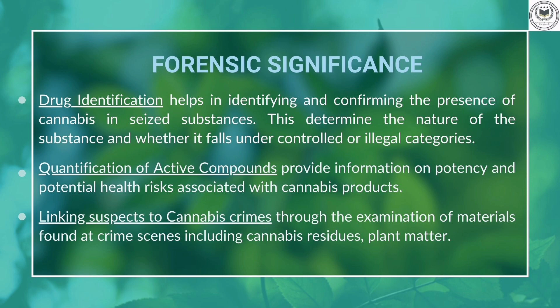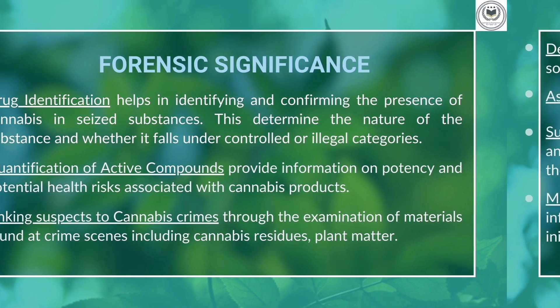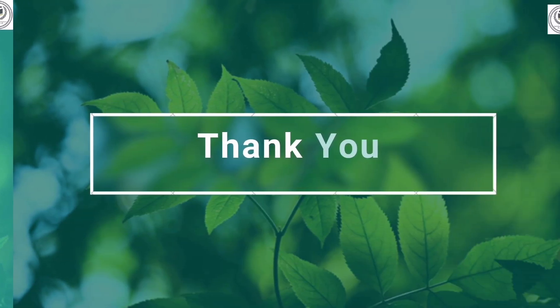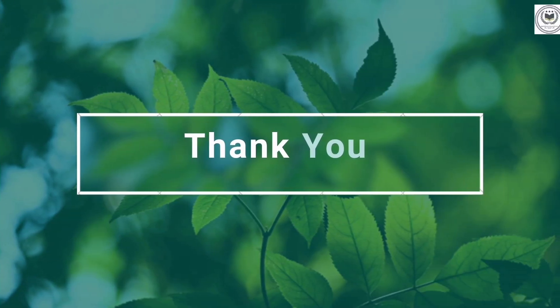Here are some of the forensic significances of cannabis. Firstly, it is used in identification of drugs in suspected samples. Secondly, it provides information on the quantity of THC present, which proves to be a high risk factor for individuals consuming it. It also links suspects to drug abuse and severe crimes. We can also determine the origin and species of specimen via genetic analysis and stable isotope methods. The origin of cannabis specimen can help in tracking down illegal cultivation practices. We can also identify various adulterants and contaminants present in plant specimens, including pesticides and heavy metals.